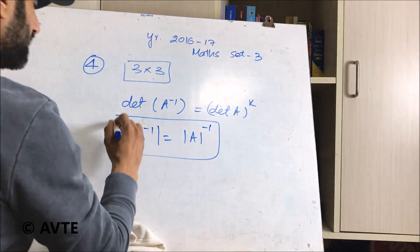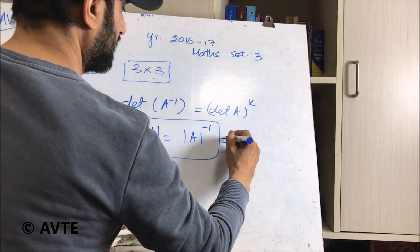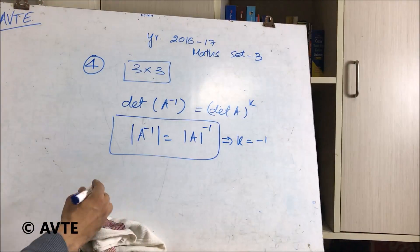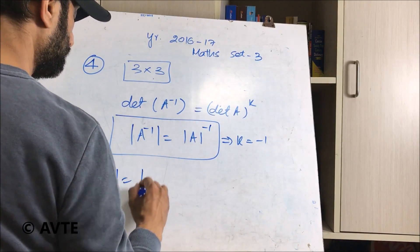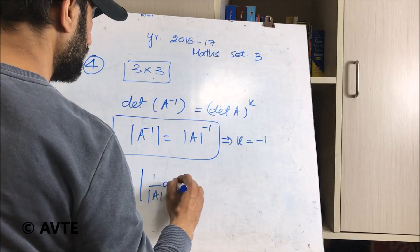If you know this thing then you can directly write the answer that k is equal to minus 1. Or you can also derive it by writing 1 by mod A into adjoint of A.